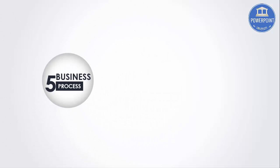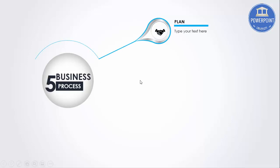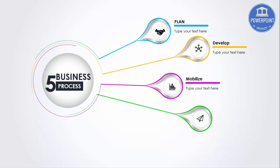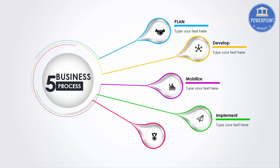Welcome to my YouTube channel PowerPoint University. In this tutorial I'm going to show you the five business steps in PowerPoint. When I click it will show one circle with five business processes — on next click it shows the first step, Plan, with a semicircle where you can add text and icons. Then the second step Develop, third Mobilize, fourth Implement, and fifth Evaluate. This is the teardrop infographic design.